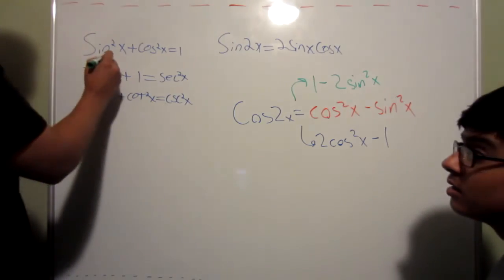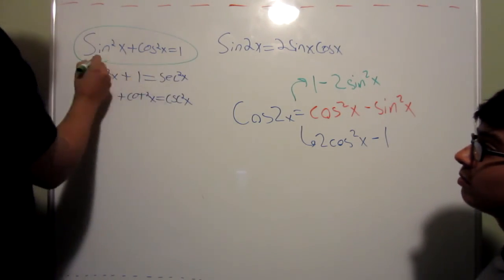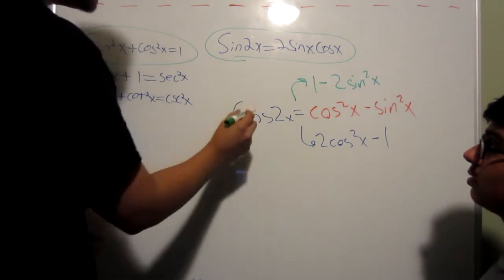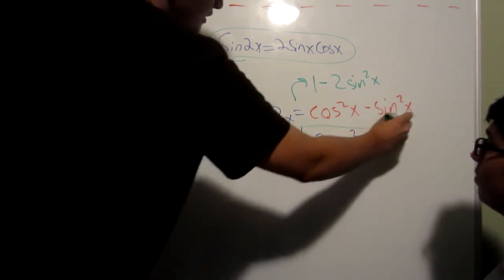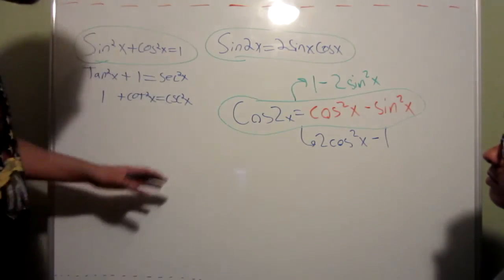So, to recap, you really only need to know this formula, this formula, or identity, and this identity. If you know these three.